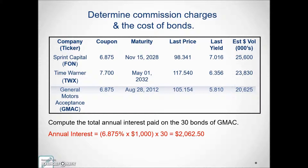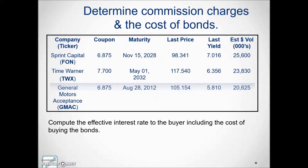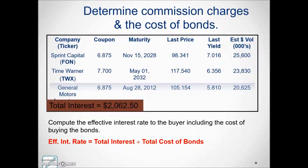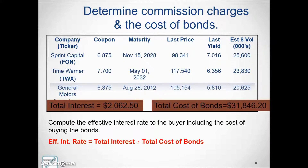Most bonds are subject to tax, with some exceptions for government-issued bonds — a municipality would fall into that category. To find the effective interest rate return on this investment, we take the total annual interest calculated previously and divide it by the total cost of purchasing the 30 bonds, giving us an effective interest rate return of almost 6.5%.